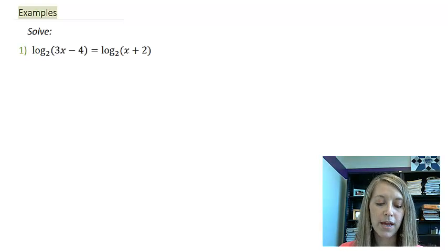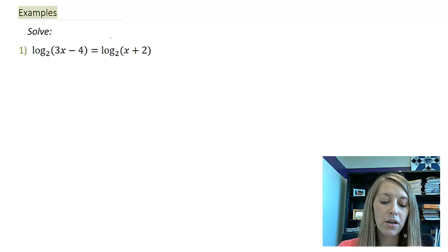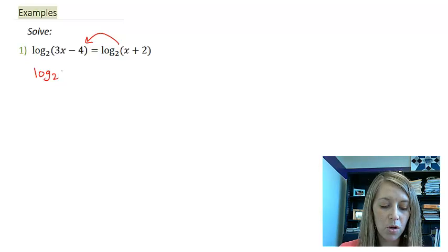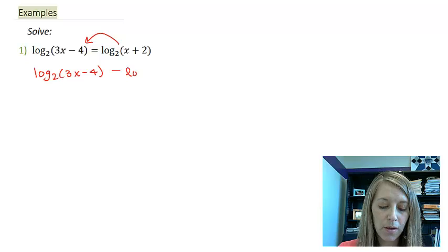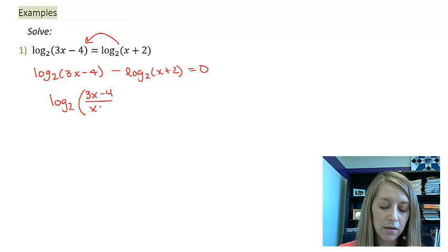So we have log base 2 of 3x minus 4 is equivalent to log base 2 of x plus 2. Well, this one I can do the exact same way that I've done them before. I notice they're the same thing, so let me put them on the same side of the equation. That gives me log base 2 of 3x minus 4 minus log base 2 of x plus 2. Now I can convert that subtraction into a division within a single log.